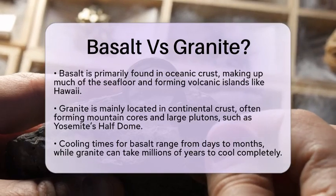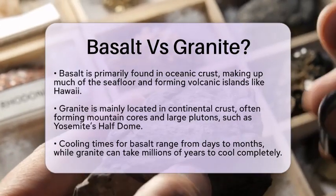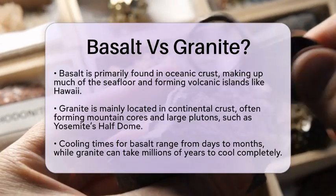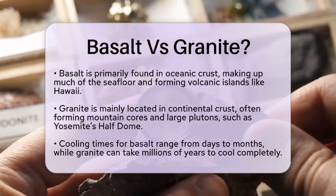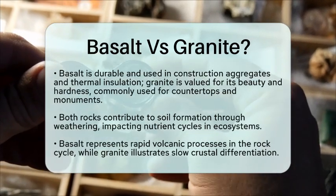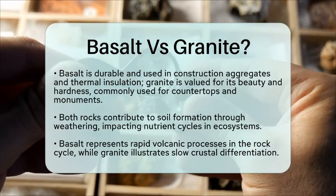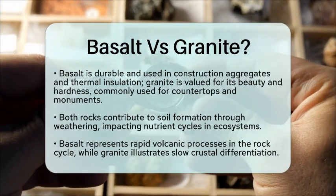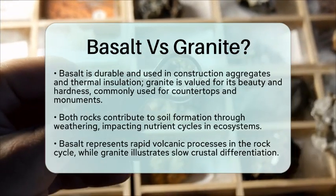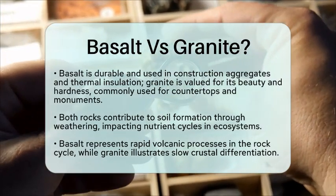Both rocks have practical applications. Basalt is durable and often used in construction aggregates and thermal insulation. Granite, known for its beauty and hardness, is commonly used for countertops and monuments. Additionally, both rocks contribute to soil formation through weathering, which plays a role in nutrient cycles within ecosystems.